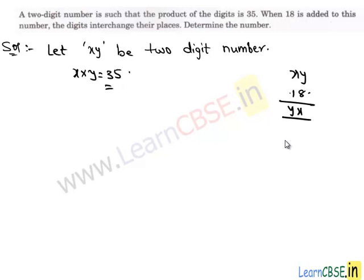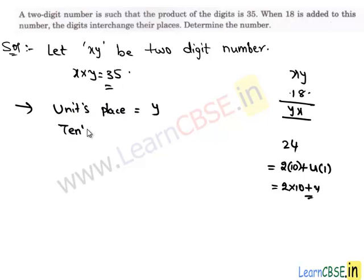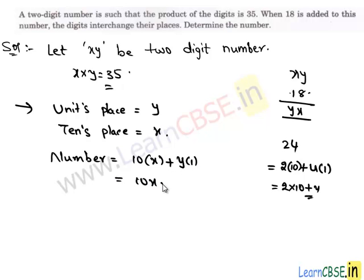Suppose we have a number which is 24. We can write 24 as 4 times 1 since it is in one's digit. Similarly, 2 is in ten's digit, so 2 times 10. So we can write this number as 2 times 10 plus 4. Similarly, we can write x, y. Here the units digit is y and tenth place is x. Then the number we have is 10 times x plus y times 1, which is 10x plus y.